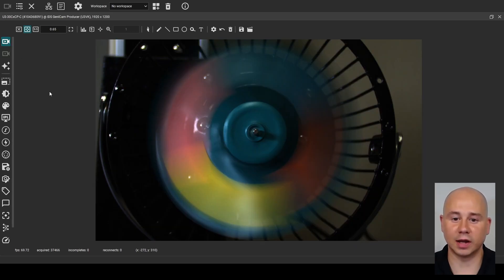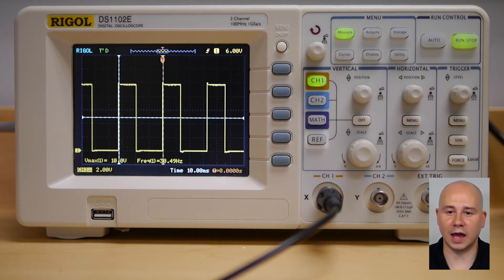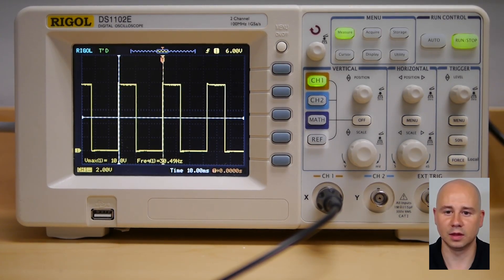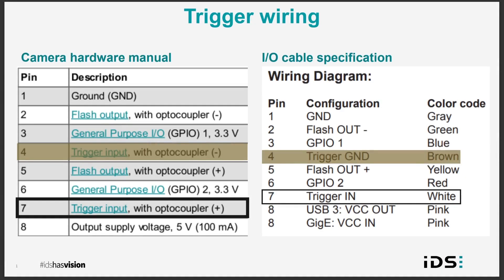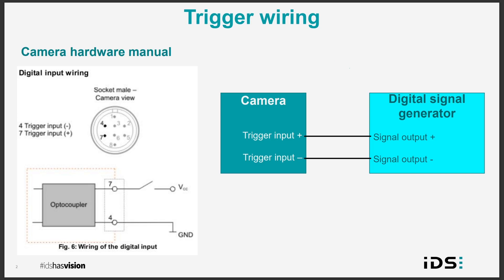I can start the image acquisition again, but the camera is not capturing any images because I have not yet connected it to the digital signal generator. On this camera model, the trigger input is also opto-isolated and accepts a maximum voltage of 30 volts, and the minimum voltage for the high signal is 5 volts. But make sure to refer to your exact camera model specifications before applying any voltage to the I/O port of your camera. Viewing the digital signal on an oscilloscope shows a voltage difference of 10 volts and a frequency of 30 hertz, which is within the specs for this camera. According to the specifications for this camera and I/O cable, the positive trigger input is pin 7, or the white lead, and the negative trigger input is pin 4, or the brown lead. The hardware manual provides the digital input wiring guide, which is pretty straightforward.